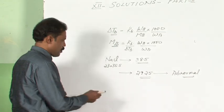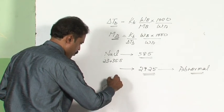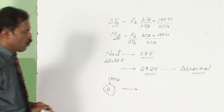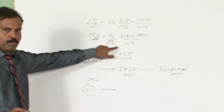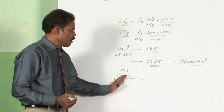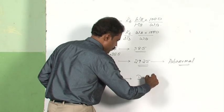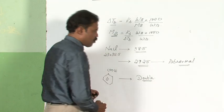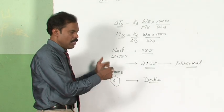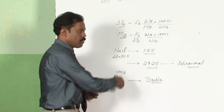Let us consider benzoic acid. When we calculated its molecular weight using colligative properties, it is seen that the molecular weight of benzoic acid is found to be double the actual molecular weight. So in some cases it is getting halved, in some cases it is getting doubled, and in some cases it is in between. There is an abnormality in the molecular weight calculated in many cases.